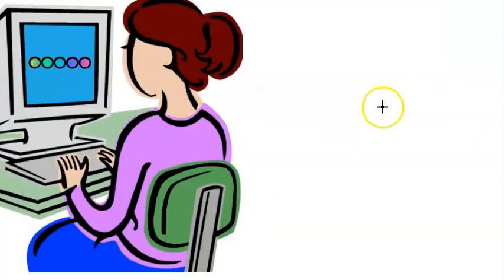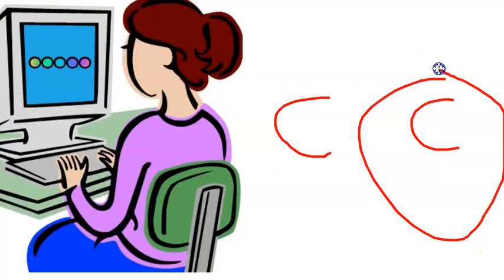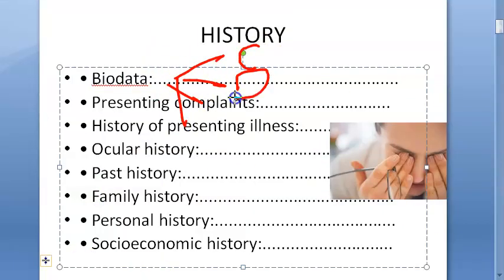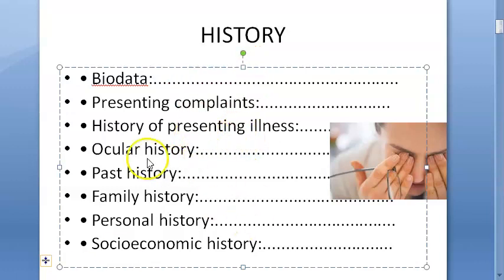Age is important because there can be congenital cataract or senile cataract. Cataract can be congenital, developmental, pre-senile (before 45-50), or senile (after 45-50). Knowing the age helps you understand which type you're likely dealing with.